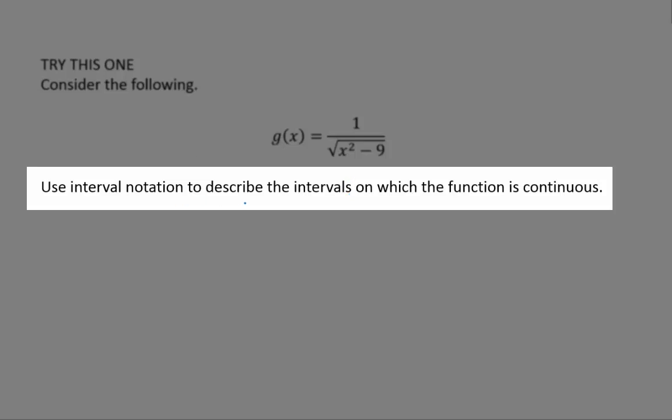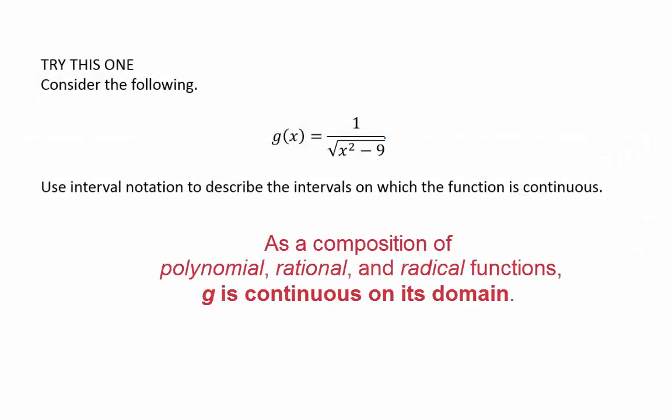So I use interval notation to describe the intervals on which the function is continuous. In the case of a composition of a rational and square root and polynomial, we can just find the domain.